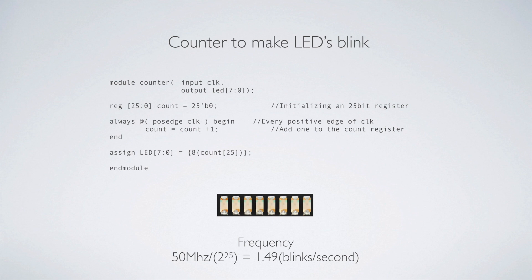If you want to find out how many seconds per blink — how often this thing blinks — you could do one over 1.49, which we can do real quick. One divided by 1.49 would be blinking every 0.67 seconds. So it's just a little bit more than one blink per second.